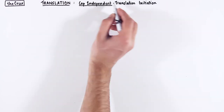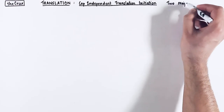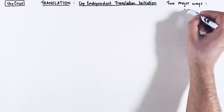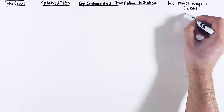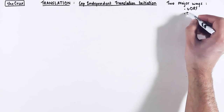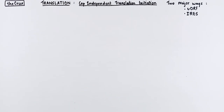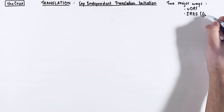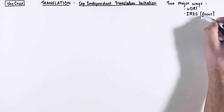There are two major ways in which CAP-independent translation occurs. One utilizes upstream open reading frames, and the other utilizes internal ribosome entry sites. We will discuss both of them in this video, but our main focus will be on IRES.